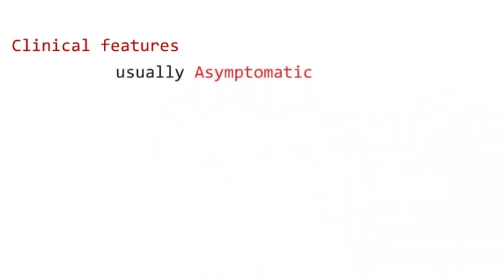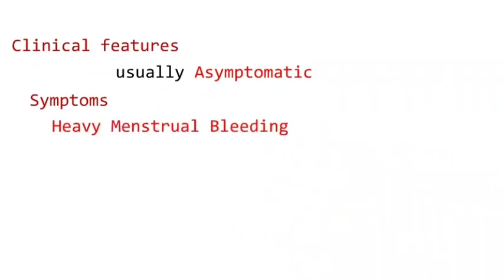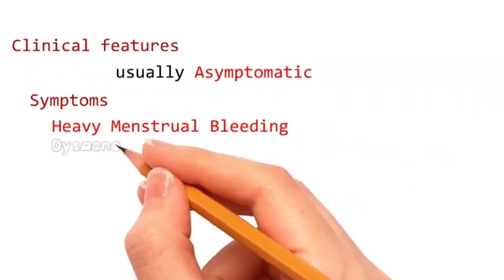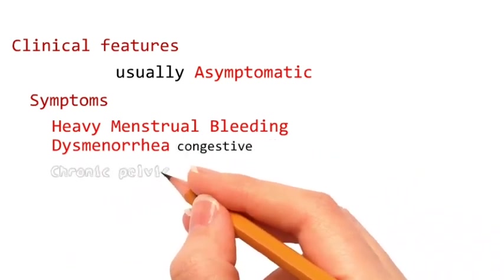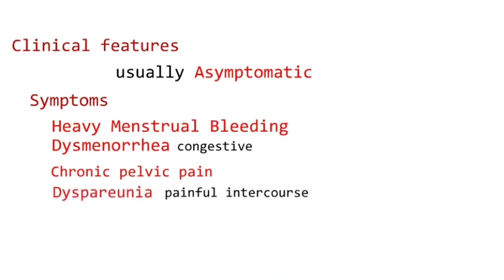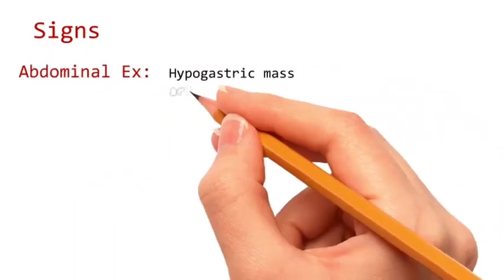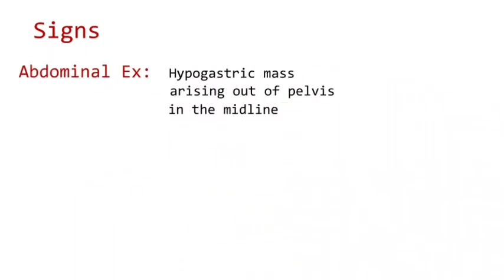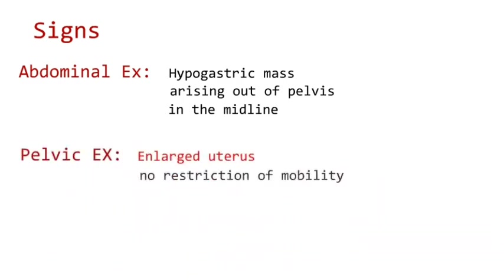Looking into the clinical features of adenomyosis, it is usually asymptomatic, but the symptoms may include heavy menstrual bleeding, dysmenorrhea which is of congestive type, chronic pelvic pain, and dyspareunia or painful intercourse. Abdominal examination may reveal a hypogastric mass arising out of the pelvis and occupying the midline. On pelvic examination, an enlarged uterus without any restriction of mobility and a tender uterus is observed.